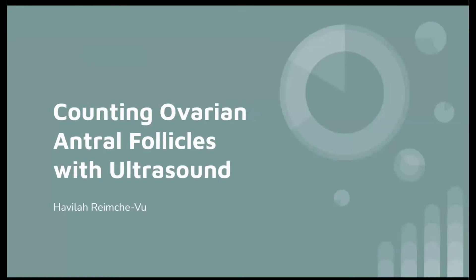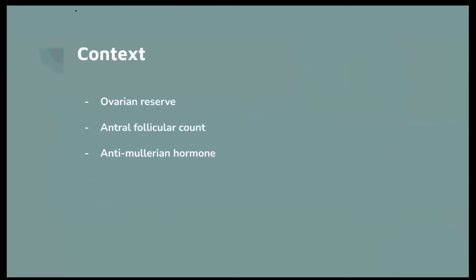Today I'm going to be talking about counting ovarian antral follicles using ultrasound. To give a little context into why we would want to do this: as of now, there is no specific test that will tell you exactly how many eggs or primordial follicles you have in your ovaries. So instead we use antral follicle counts or AMH hormone to test what we know as a woman's ovarian reserve.